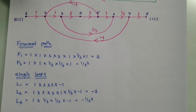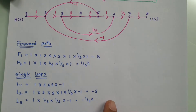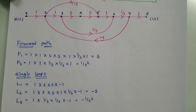Next we need to see how many two non-touching loops there are. All three loops are touching each other, so we don't have any two non-touching loops.